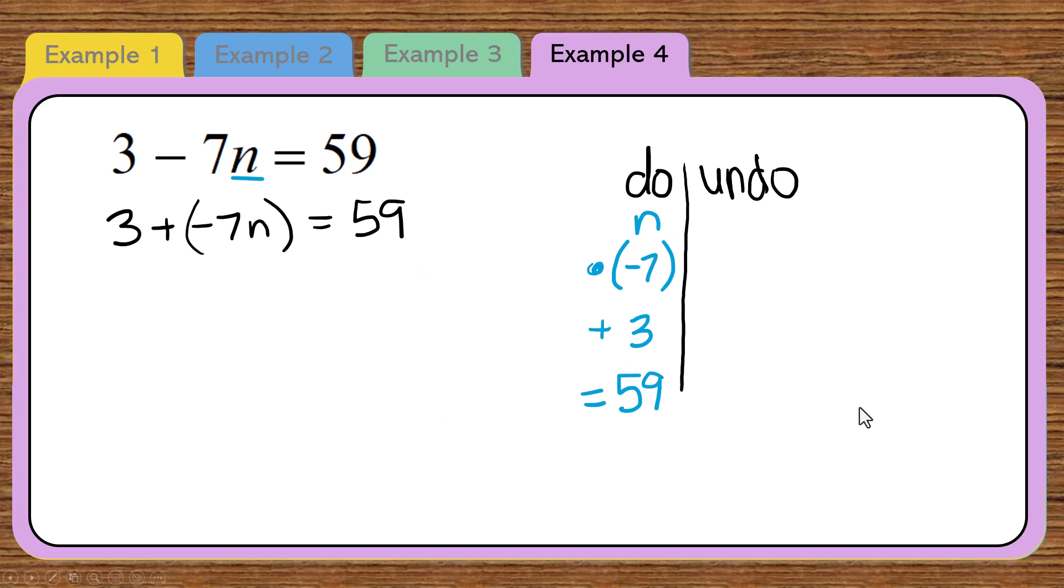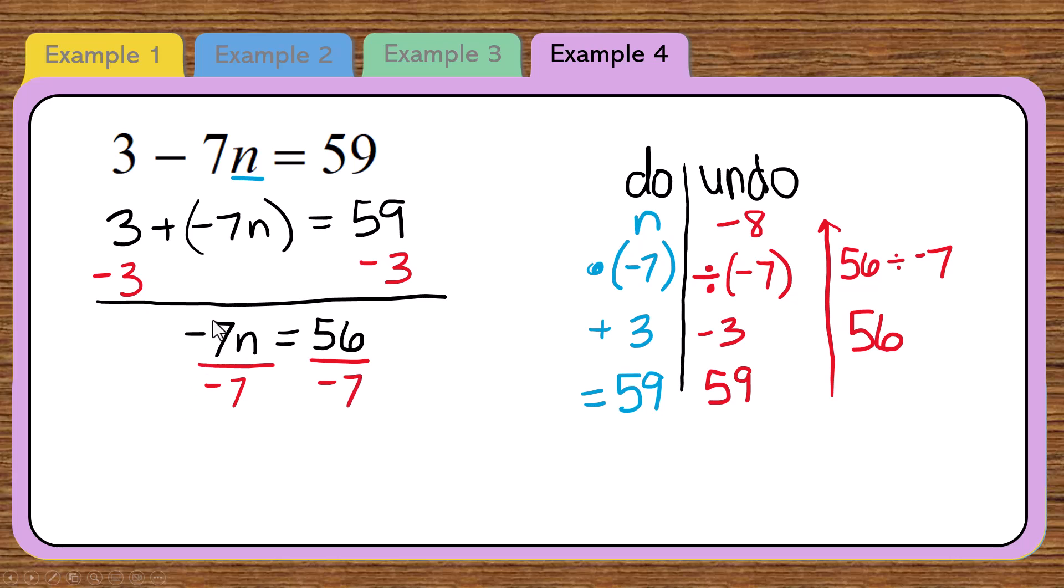We go back and do the undo side, which is the cool part. Starting with the 59, we do the opposite. Instead of adding 3, which is subtracting 3. We do the opposite of multiplying by a minus 7, which is dividing by a negative 7. 59 minus 3 is 56. And then 56 divided by negative 7. That is a negative 8. Let's go over here and do the algebra. The first step, subtract 3 from both sides. 3 minus 3 is 0. That's gone. So the minus 7n comes down. 59 minus 3 is 56. The second step would be to divide by the negative 7. Negative 7 divided by negative 7 is 1. So that just cancels out. And we left with n equals 56 divided by negative 7 is negative 8.